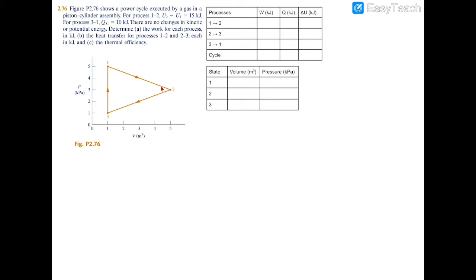To tabulate everything here between both the states and the processes, I made a couple of tables. The bottom one is going to tabulate each state on this PV diagram. At state one, we have a volume of one meter cubed and a pressure of five kilopascals, so we're going to have one and five. At state two, we're going to have five and three. At state three, we're going to have one and one. From the problem statement, from one to two we have a change in internal energy of 15 kilojoules, and from process three to one we have a heat transfer of 10 kilojoules.